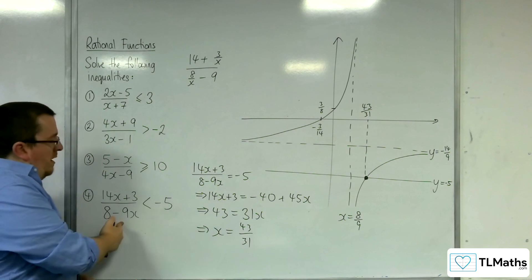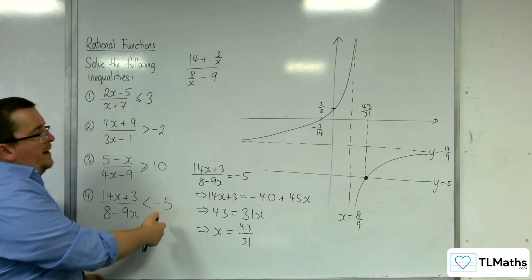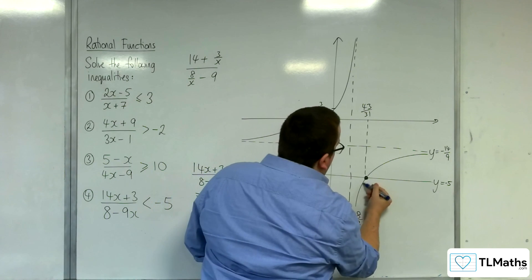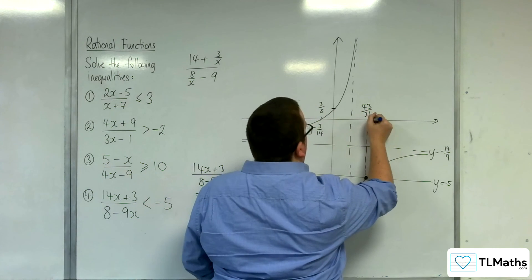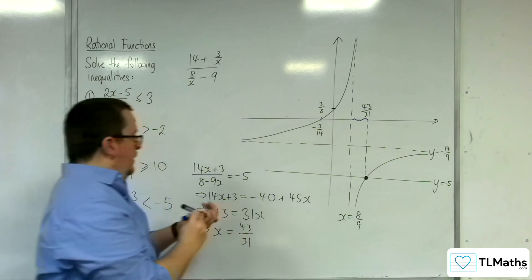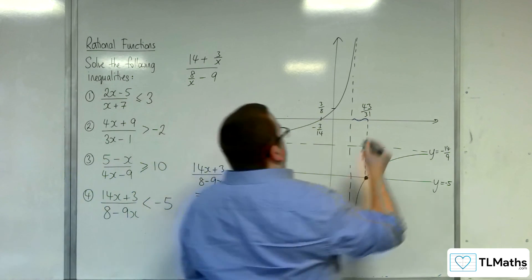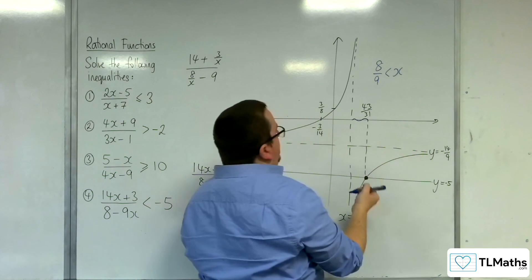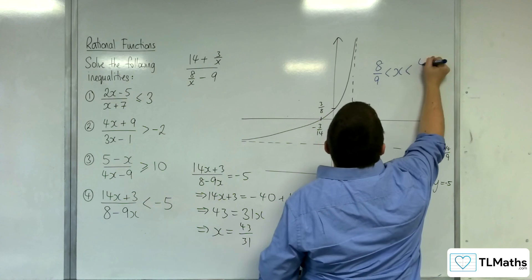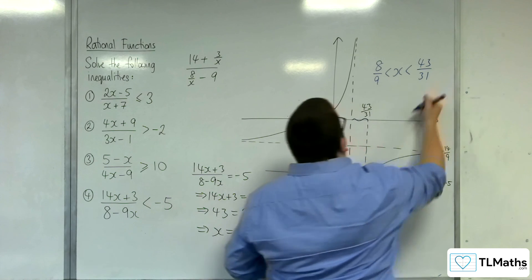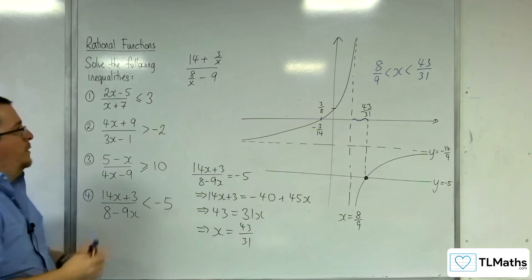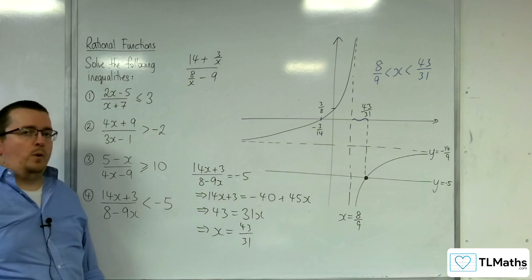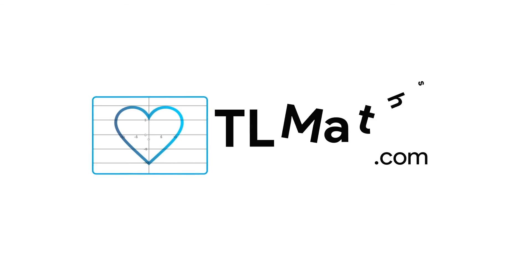Where is the graph below y equals minus 5? It's below it there for that region. So the solution is x > 8/9 but x < 43/31. And that is how we can solve each of these inequalities.